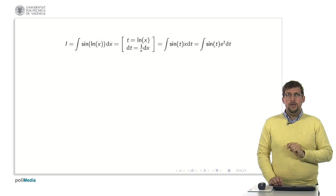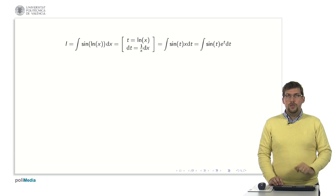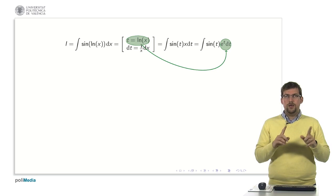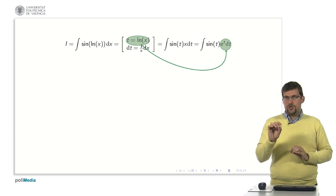But of course we have to have it all in terms of t that's the reason why the x has to be changed. How do we transform this x? Well let's notice that in the first term within the brackets we find that t is equal to the natural logarithm. Since t represents the primitive function of the logarithm x is the exponential of t. These are inverse functions, the logarithm and the exponential.